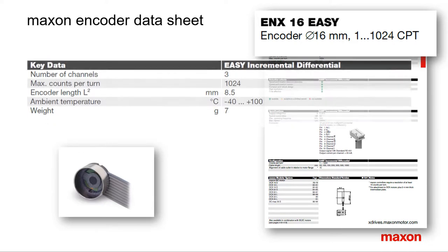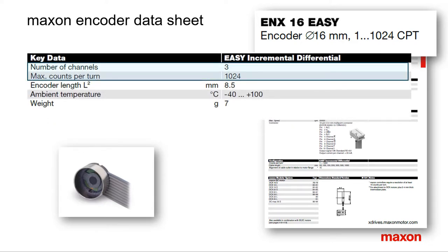The key data gives general information such as number of channels and maximum possible counts. The number of channels 3 indicates that there is an index channel in addition to channels A and B. From the designation differential in the black bars, we can conclude that there is a line driver available.